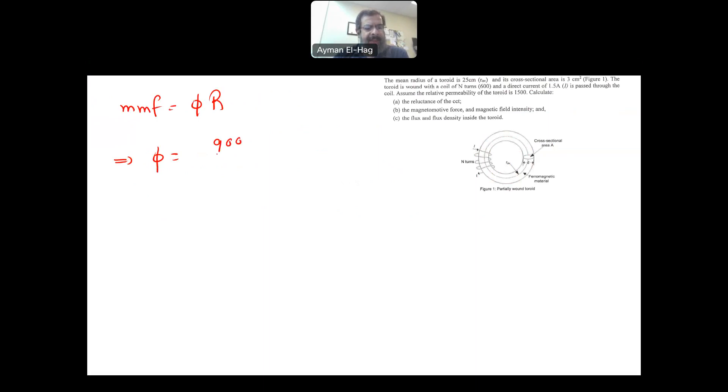So basically your flux is equal to your MMF, which is the 900, divided by the reluctance, which is 2,777,777.8, which will give me 0.324 milliweber, very small flux.